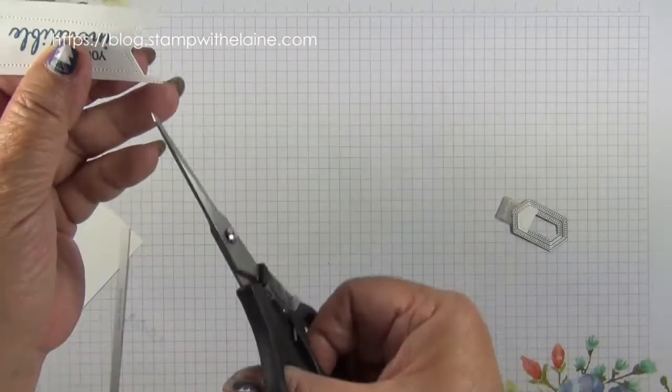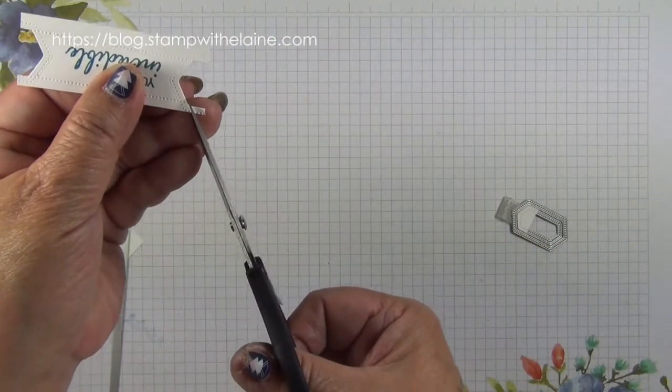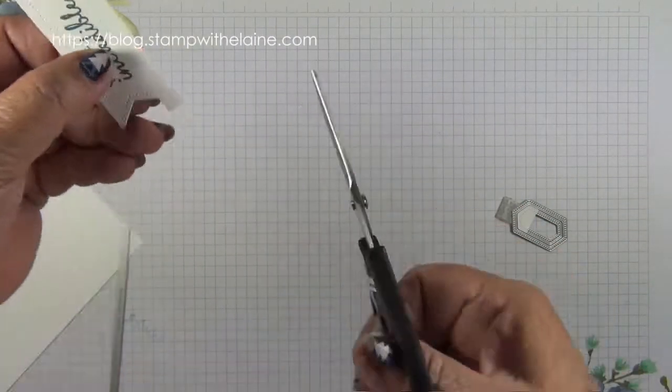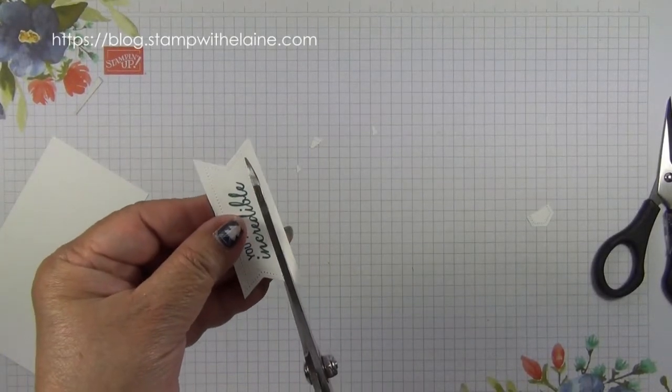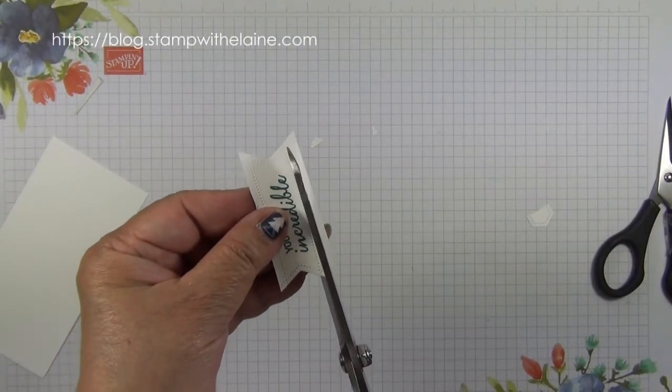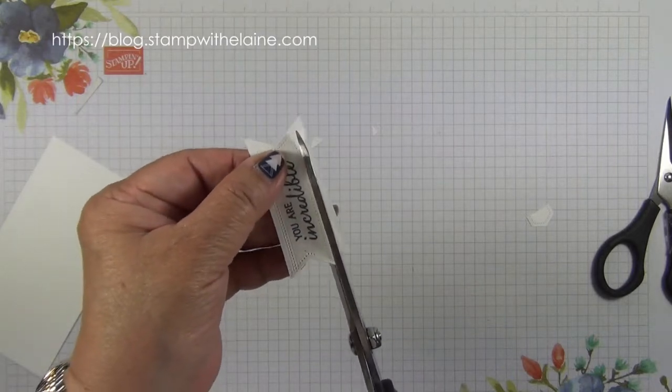So all you have to do is just snip it off. Follow the line, snip the rest off. Then if you have a big pair of scissors, just follow the line and trim the rest of it off.